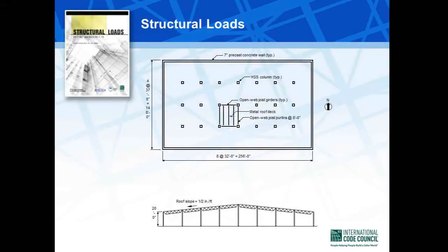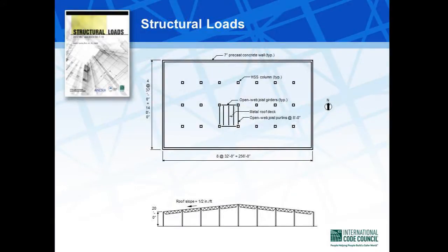This example is given in Chapter 4 of the book, and it covers the determination of snow loads for a one-story warehouse using the flowchart that was given in the previous slide. These examples were formulated to illustrate provisions that are not commonly covered in other resources.